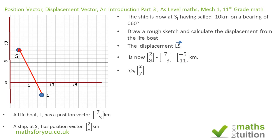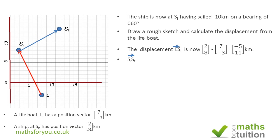Meanwhile, the ship now sails from S_i to S_f. The displacement vector is given by x, y, and to find x and y we need to use the information given to us. The ship sails at a bearing of 060 degrees and the distance is 10 kilometers, so we need to find x and y.